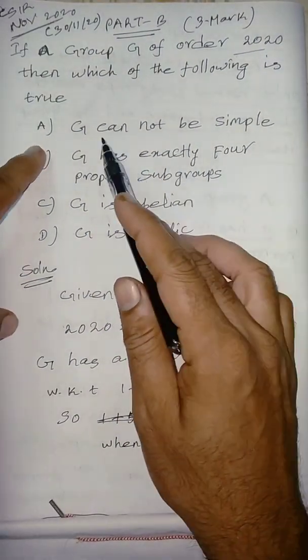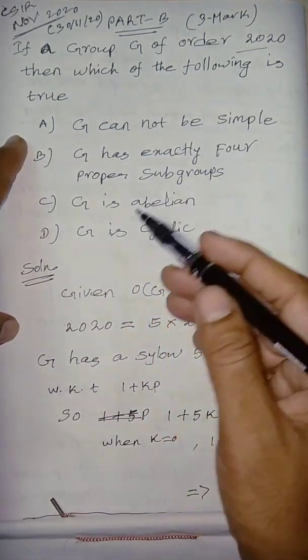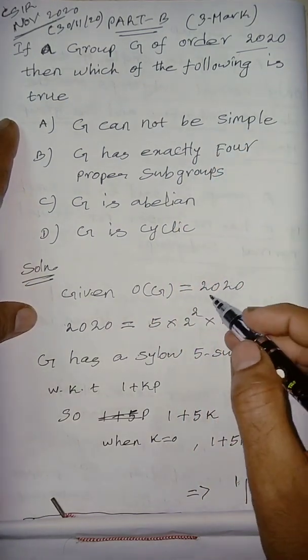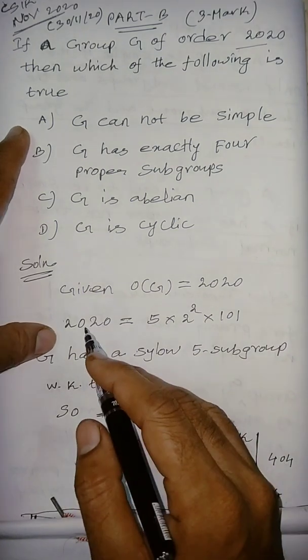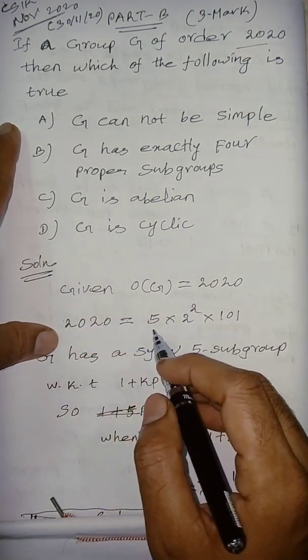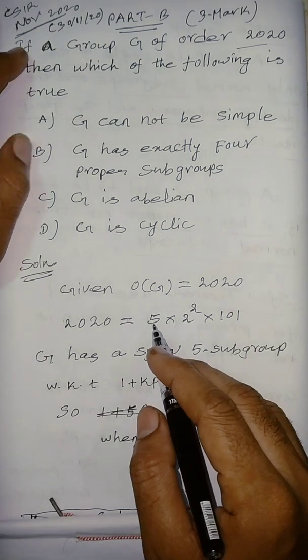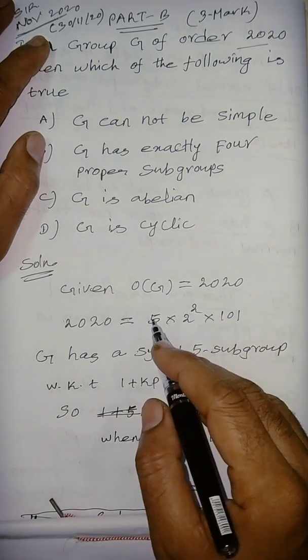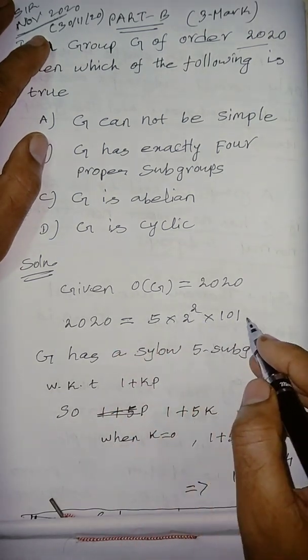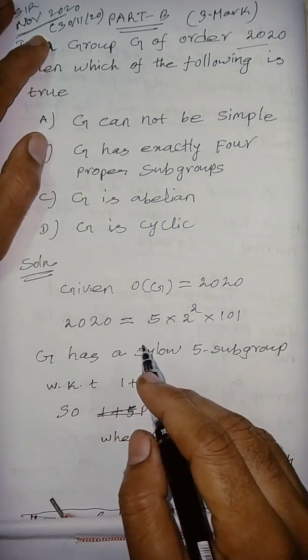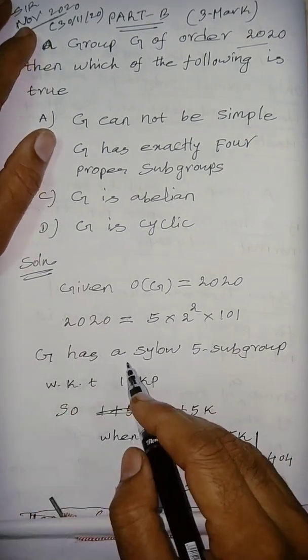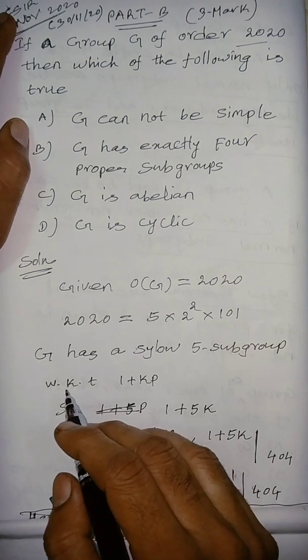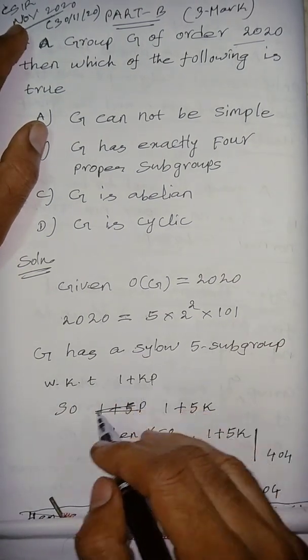Now let us solve the problem. First option: G cannot be simple. Solution - what is the given order of the group? 2020. So 2020 can be written as the prime power multiples, right? This can be written as 5 × 2² × 101. G has a Sylow 5-subgroup.